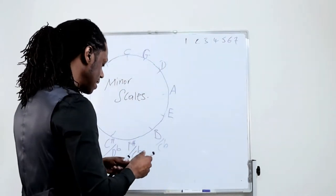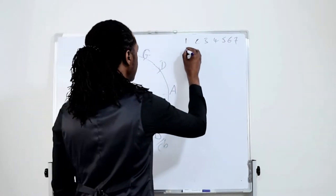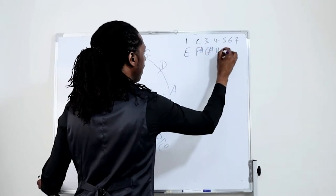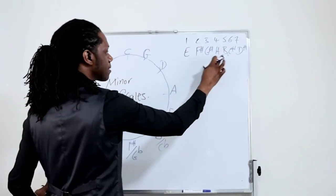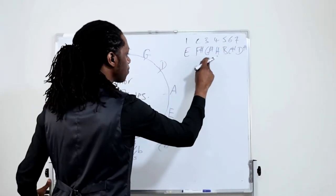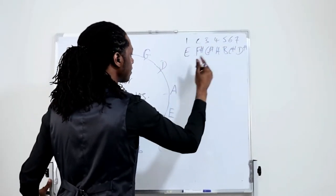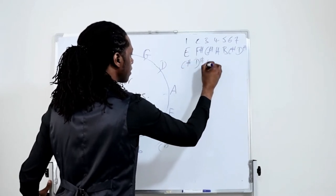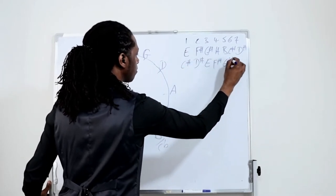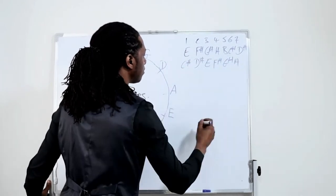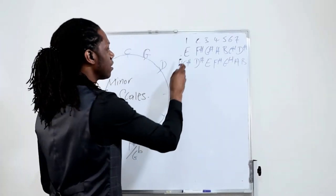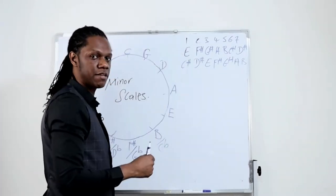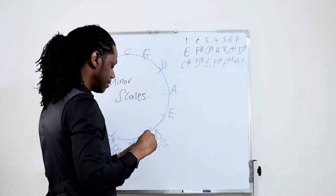So we're at E. E, F sharp, G sharp, A, B, C sharp, D sharp. The sixth degree — one, two, three, four, five, six — is C sharp. So the natural minor or relative minor of E major is C sharp minor, with notes C sharp, D sharp, E, F sharp, G sharp, A, B.